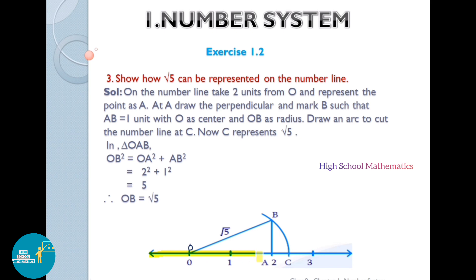First, let us draw a number line and mark points 0, 1, 2, and 3. On the number line, take 2 units from O and mark point A. From A, draw a perpendicular and mark B such that AB equals 1 unit. Then, with O as center and OB as radius, draw an arc to cut the number line at C.